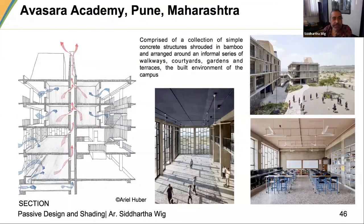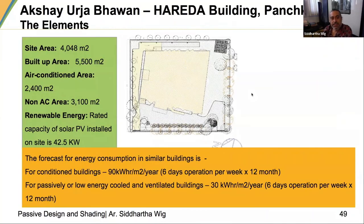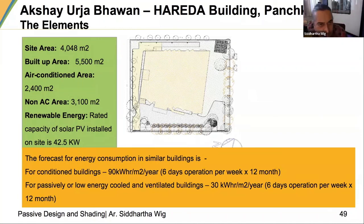The last project I want to look at in more detail is the Akshay Urja Bhavan — the Hareda building — in Panchkula. It was a one-acre site; the total built-up area was to be about five and a half thousand square meters.